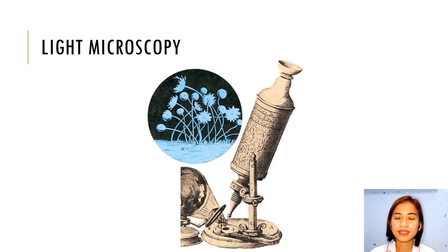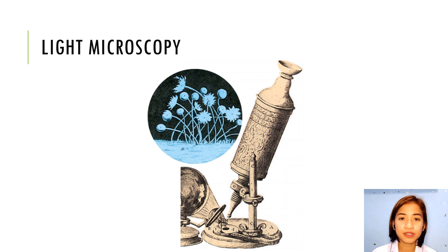Now we have learned the positive and negative impacts of microbes in human society. For the next topic, we will be dealing with the discovery of bacteria. Light Microscopy: The English mathematician and natural historian Robert Hooke was an excellent microscopist. In his famous book Micrographia, the first book devoted to microscopic observations, he illustrated many microscopic images including the fruiting structures of molds. This was the first known description of microorganisms.